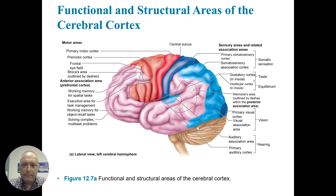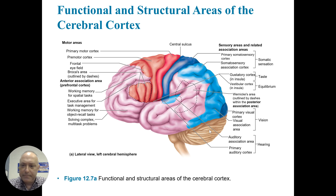Different functional and structural areas of the cortex: we've got the primary motor cortex, which includes Broca's area for speech. We've got the sensory cortex, which includes somatic sensation — soma means body — and includes taste and equilibrium, vision, and hearing. The prefrontal cortex also has an anterior association area for working memory and executive function.